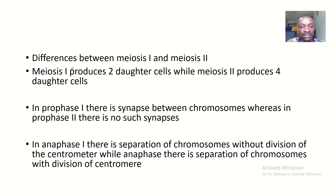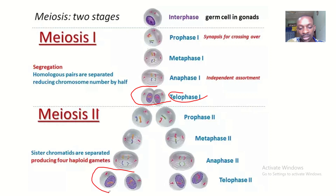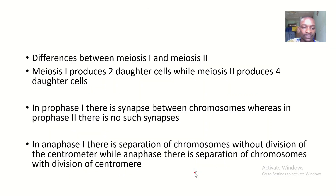The first difference is myosis 1 produces two daughter cells, while myosis 2 produces four daughter cells. You can see the end product of myosis 1 is two daughter cells, while the end product of myosis 2 is two daughter cells on this side and two daughter cells on this side, making it four daughter cells.